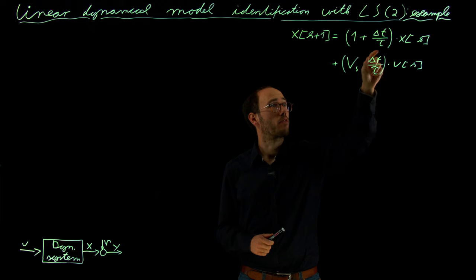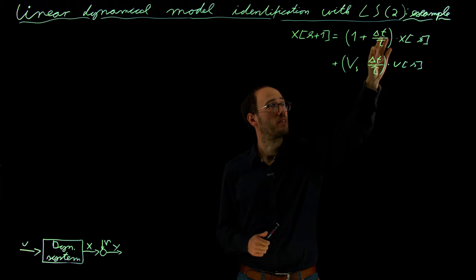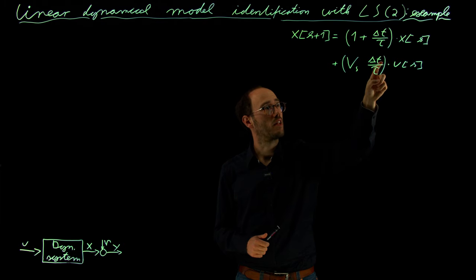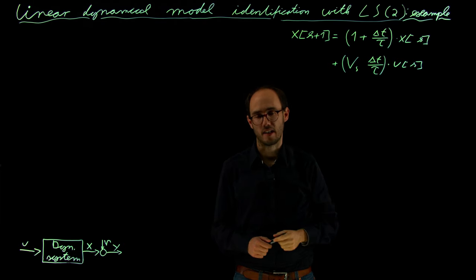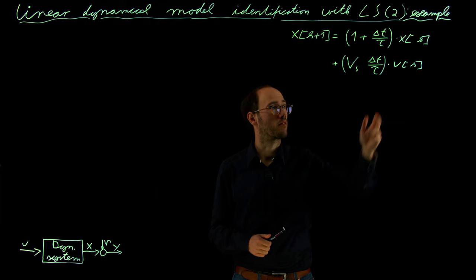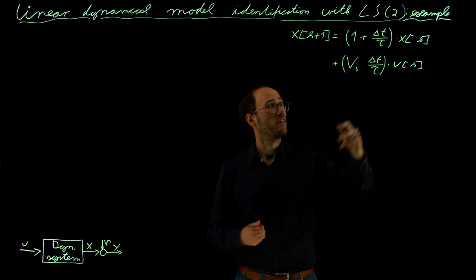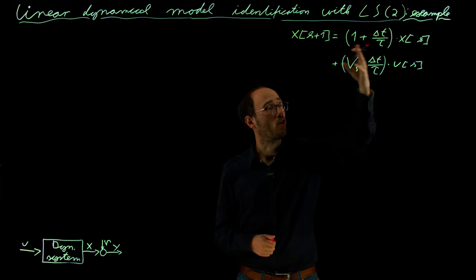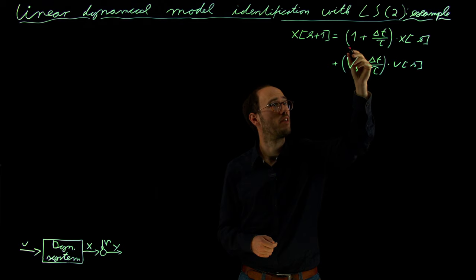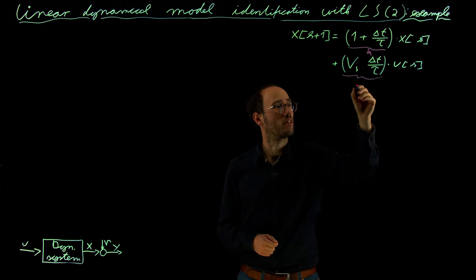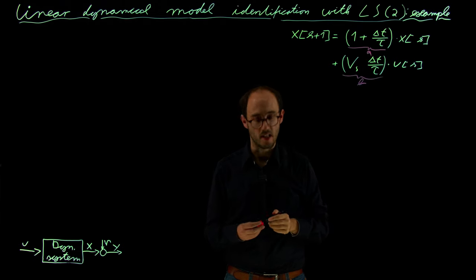In this sense, I have written that with the time step delta T and the time constant tau. Here is also delta T and the time constant tau, and Vs would be something like the steady-state gain between u and x. We can combine or somehow summarize these parameters here in this parenthesis. So this parameter here would be the lump parameter A, and this parameter here in this parenthesis would be the lump parameter B.